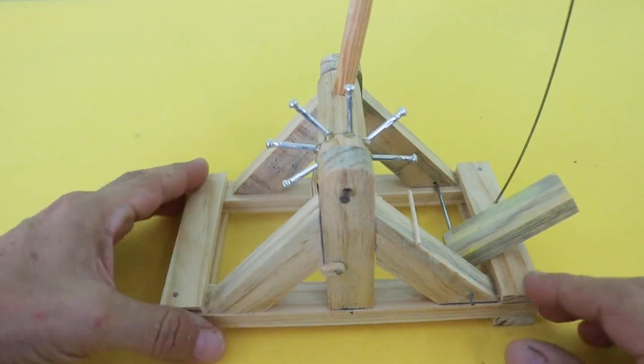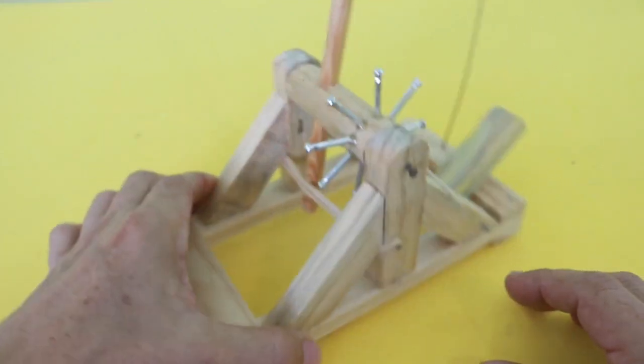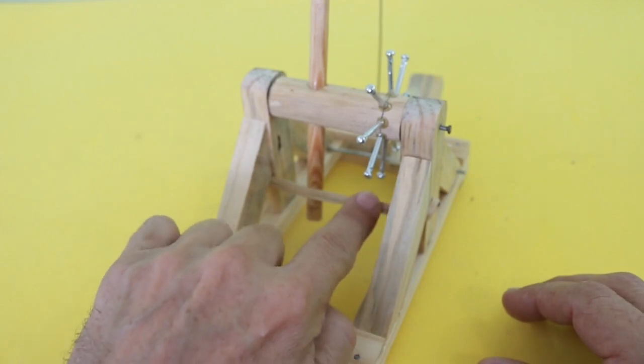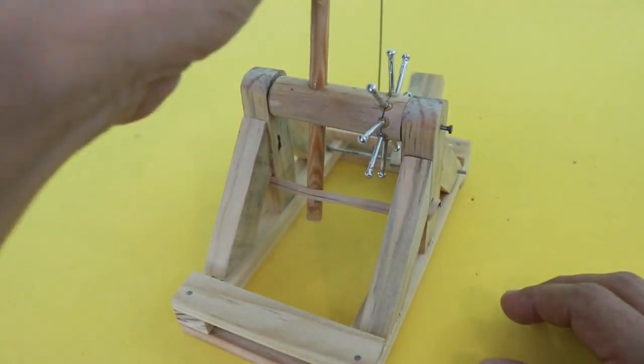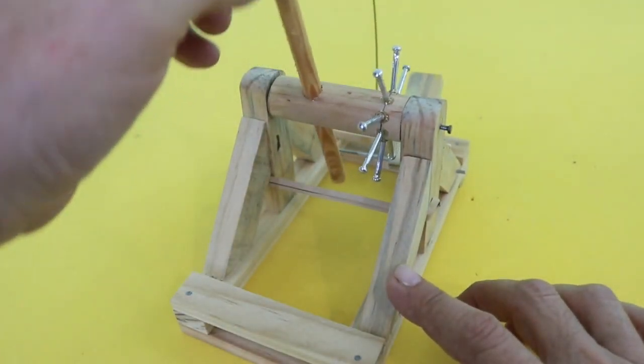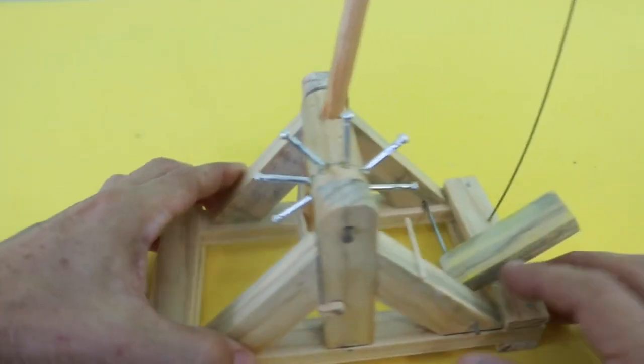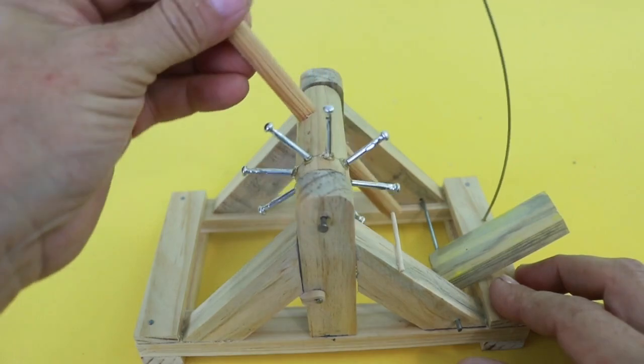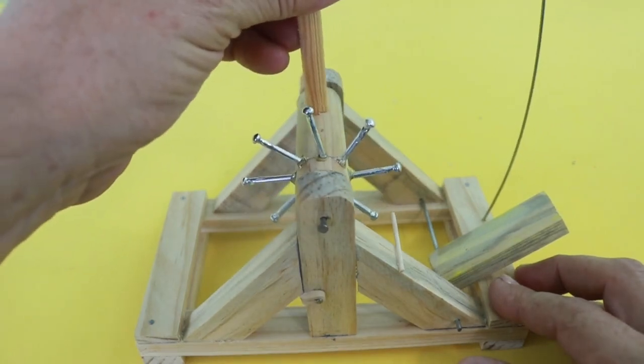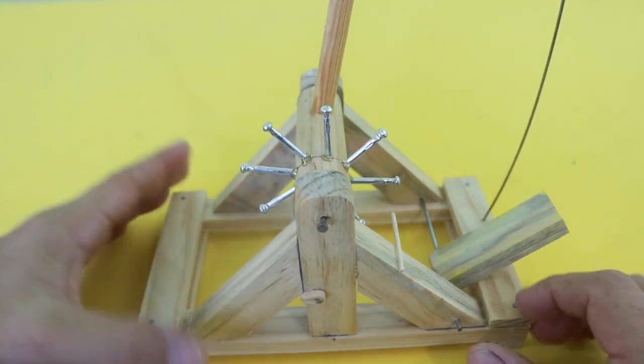There is a stop here to prevent the lever from moving too far, because it only needs to move to the vertical position where the projectile is fired.